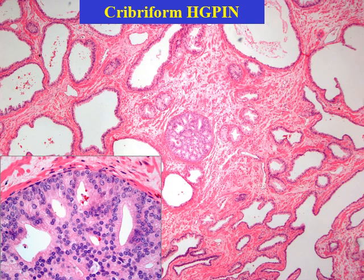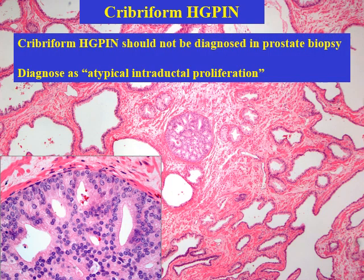This is an example of cribriform high-grade PIN in a radical prostatectomy specimen. You can see a single cribriform lesion with round and smooth contour. At high power, the nuclei are uniform and have small nucleoli. But I want to emphasize this: cribriform high-grade PIN should not be diagnosed in a prostate biopsy. Instead, if you see a cribriform atypical cribriform lesion in the prostate biopsy, it should be diagnosed as atypical intraductal proliferation for proper patient management, because these patients often need immediate repeat prostate biopsy.